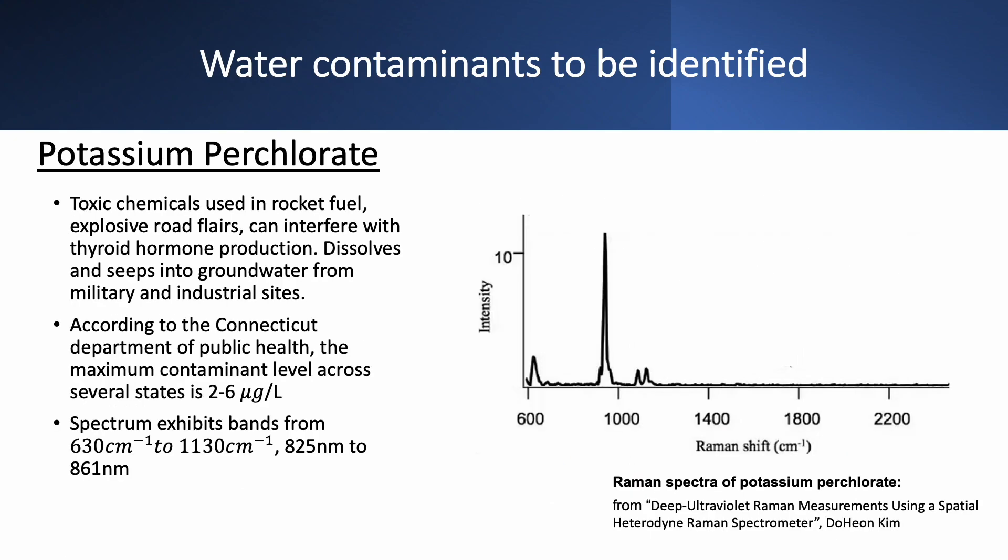Potassium perchlorate is another sample whose Raman spectrum we would like to acquire. Perchlorates are toxic chemicals that are used in rocket fuel or explosive road flares and can actually interfere with thyroid hormone production. These chemicals can come from military and industrial sites and often dissolve and seep into groundwater.